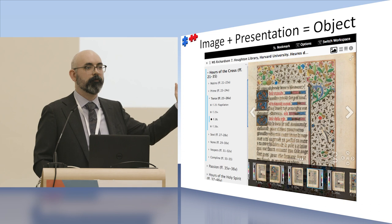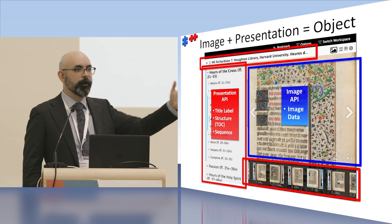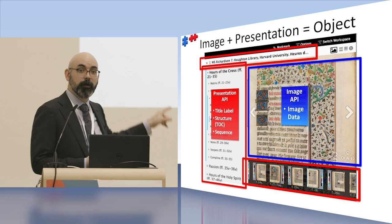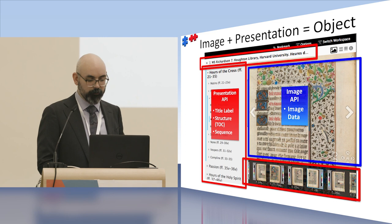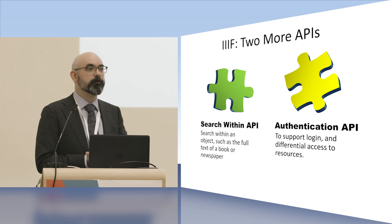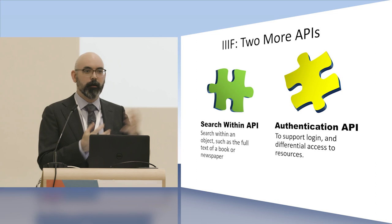The best way to show this is to look at a IIIF viewer. The section in blue is delivered by the Image API — that's the body of the material. The pieces in red are delivered by the Presentation API: the sequence of the pages in terms of table of structure, the thumbnail strips, and the metadata at the top. We also have a search API to search within transcriptions or translations, and a lightweight authentication API for contexts where materials can only be seen by staff.